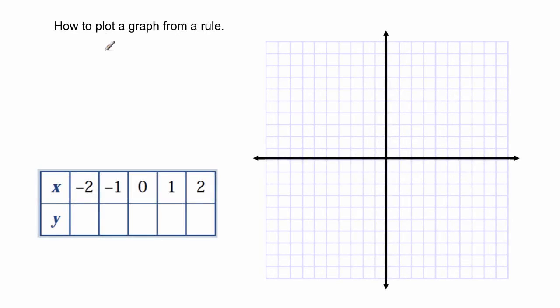Let's have a look at how we can plot a graph from a given rule. The rule that we're going to use today is the one that says y is equal to 2x minus 1.